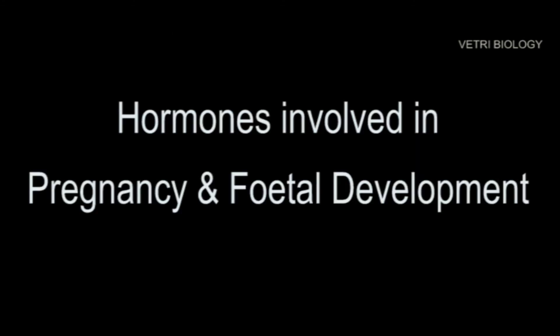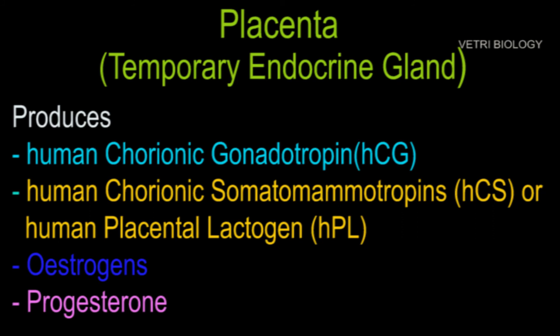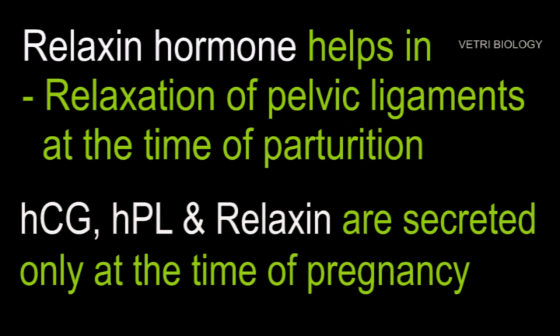The placenta acts as a temporary endocrine gland. It produces large quantities of human chorionic gonadotropin (HCG), human chorionic somatomammotropin (HCS) — also called human placental lactogen (HPL) — estrogen and progesterone. All these hormones are essential for normal pregnancy. During the later phase of pregnancy, a hormone called relaxin is secreted, which helps in relaxation of the pelvic ligaments at the time of parturition.